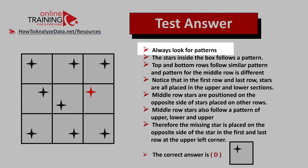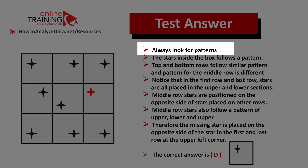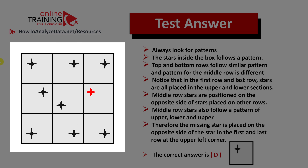As usual, the best advice is to always look for patterns. There are multiple patterns: the top and bottom rows follow similar patterns — stars are at the top for the top row and at the bottom for the bottom row. If you follow the middle row, you'll see it follows a completely different pattern: the middle row stars go top, bottom, and then logically top again.